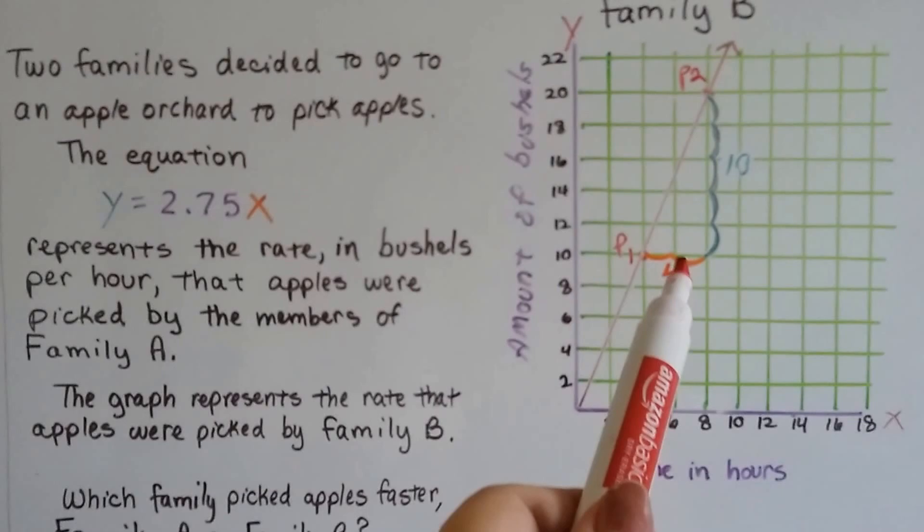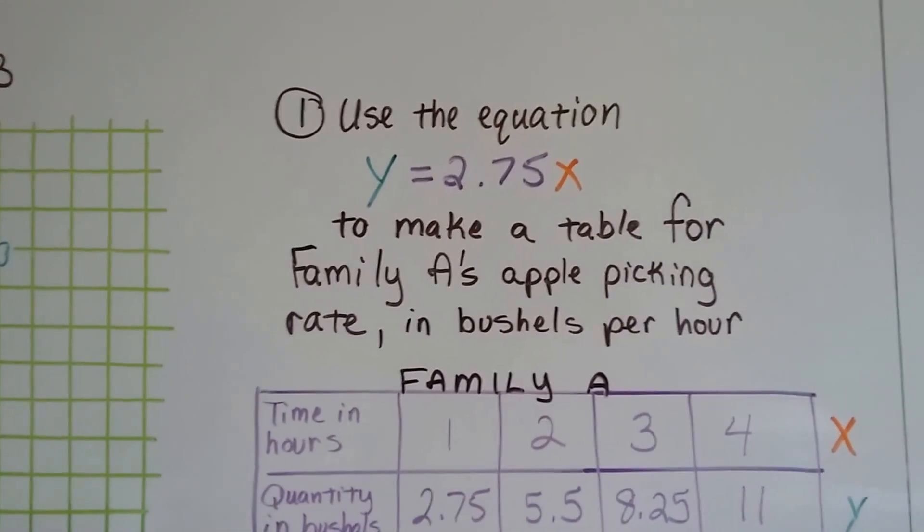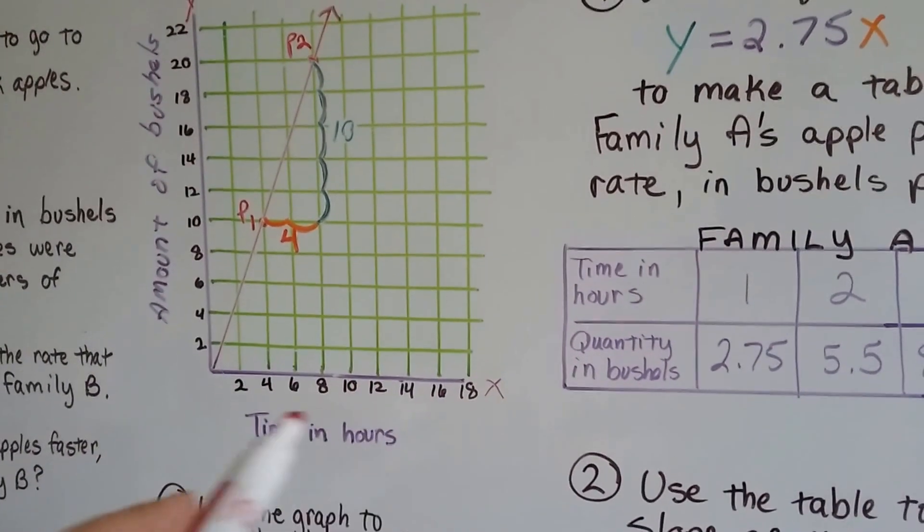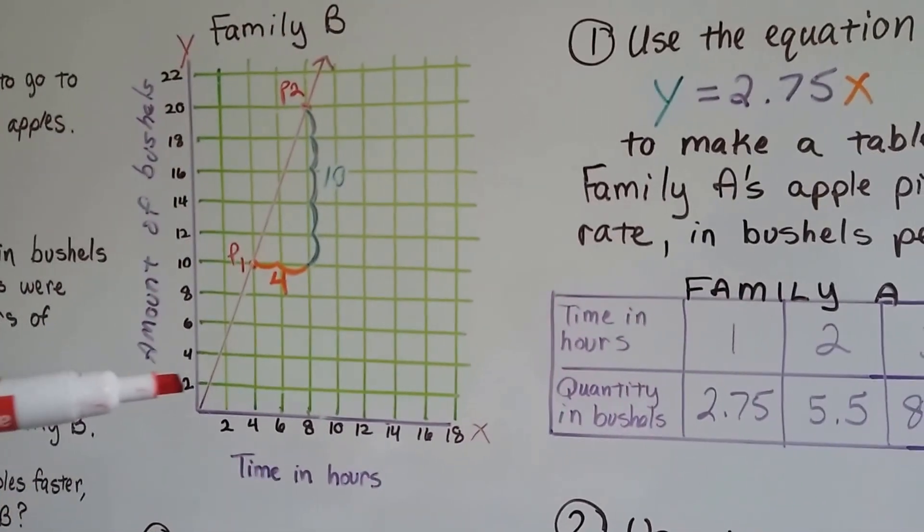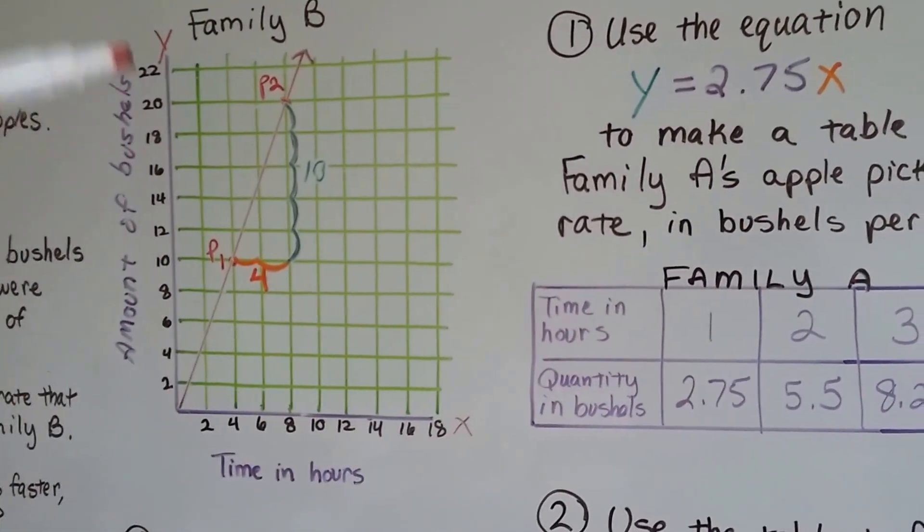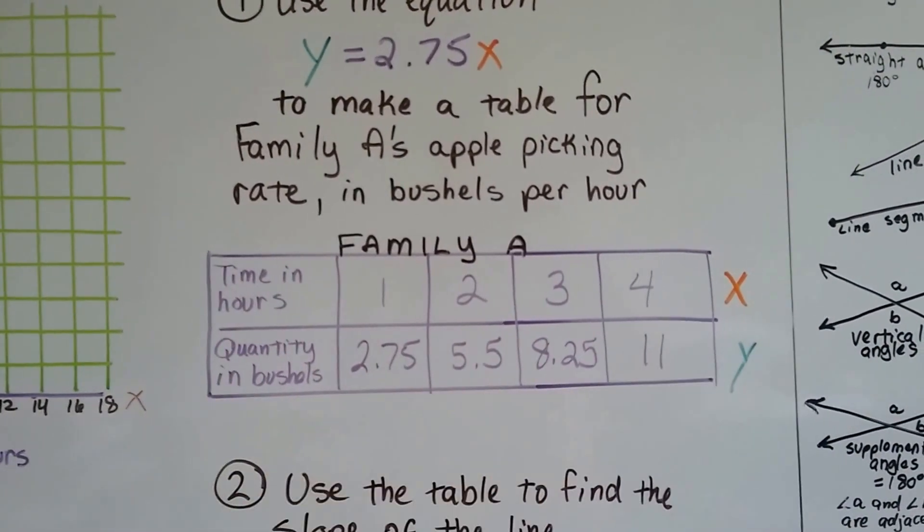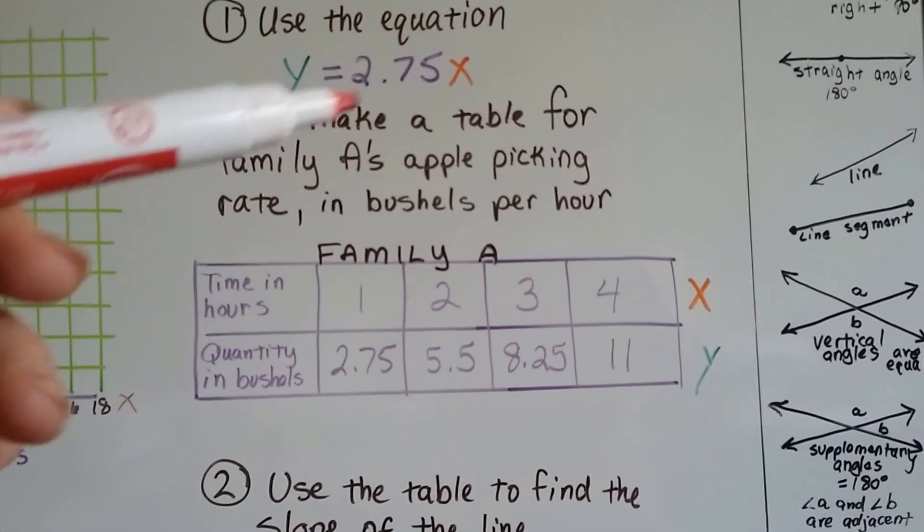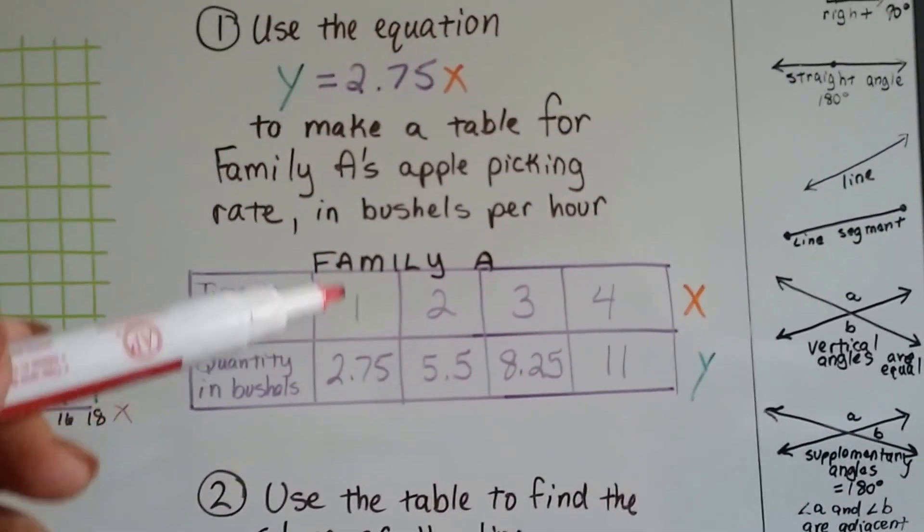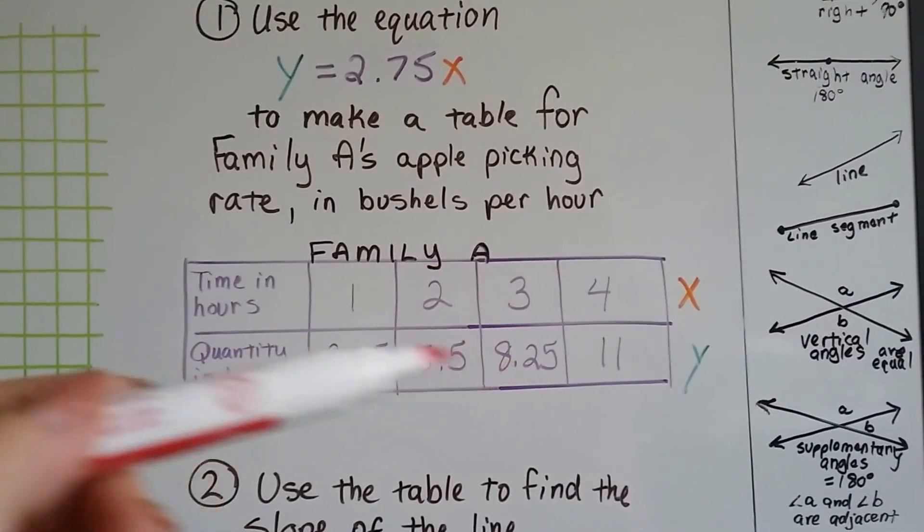We have a graph for family B, but we only have an equation for family A. So the first thing we do is we use the equation to make a table for family A's apple picking rate in bushels per hour. Here's the time in hours counted by twos for family B, and the amount of bushels counted by twos. Time in hours is x, bushels is y. So here's family A. They've got 2.75 for 1 and 5.5 for 2 for each of the hours.